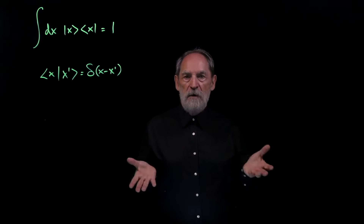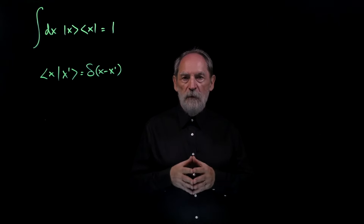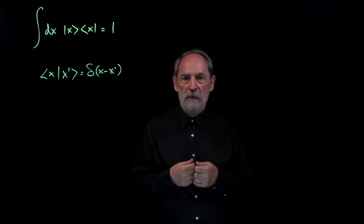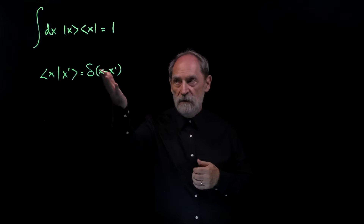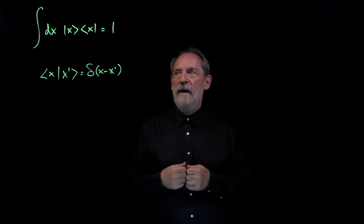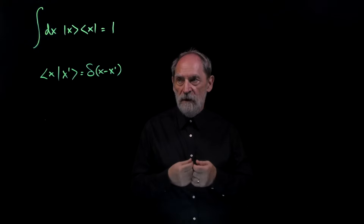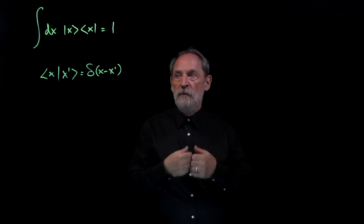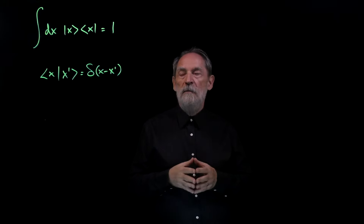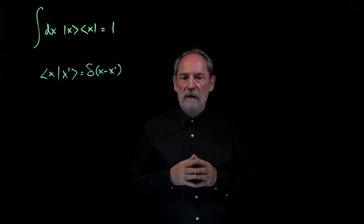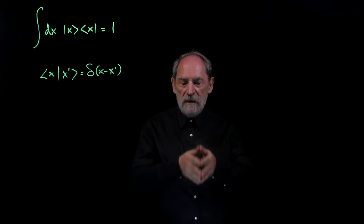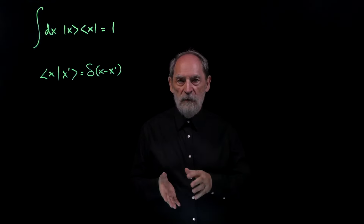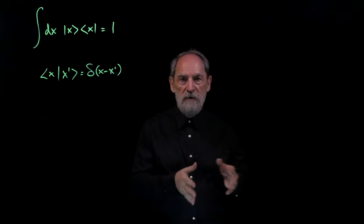In summary, the kets and bras for motion along a line require generalizations of sums to integrals, and of the Kronecker delta symbol to the Dirac delta function, which we can model by ordinary functions. In the next lecture, we take the step from position kets and bras to the position operator.